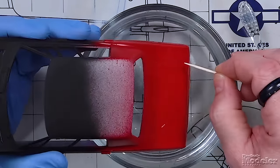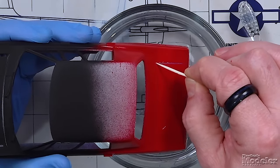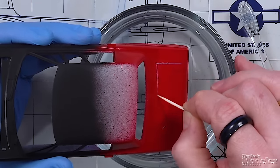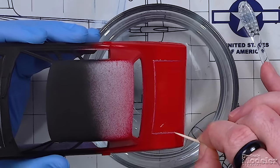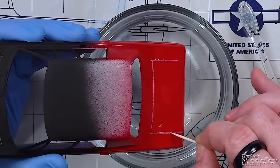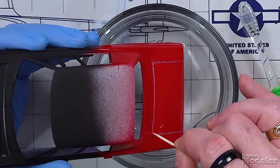So we can go ahead and take this and start running it along this toothpick and start running it along the edge of that trunk lid, and you can see right away it is going right through that paint.